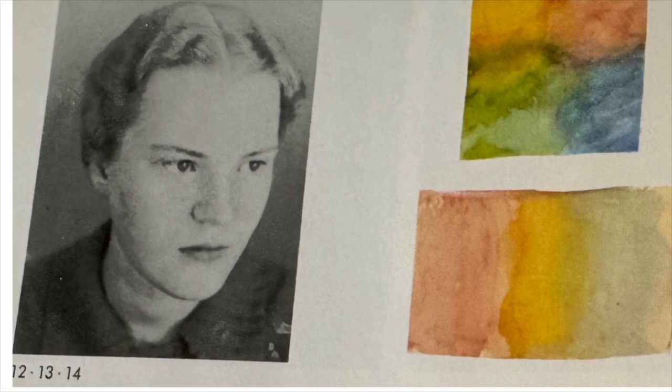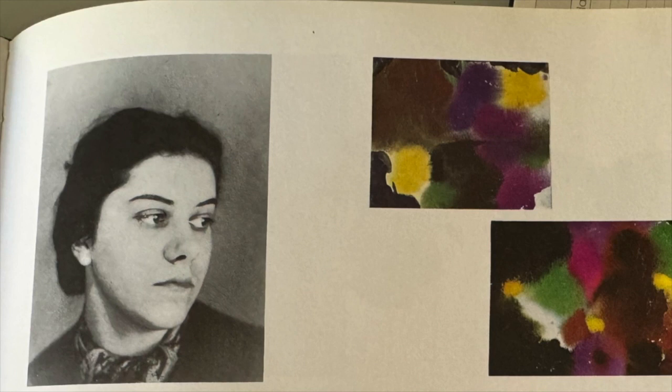In this first example, the young woman exhibits pure colors and a large number of clearly distinguished chromas. For her, the fundamental contrast is hue. In this second example, we can see that black is assigned a major role and the pure colors are shot with black.